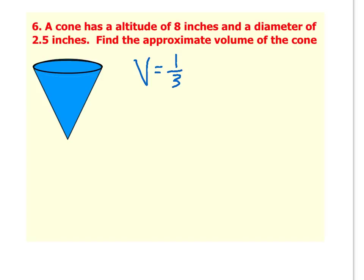The volume of a cone is 1 third times the area of the base times the height. And of course the base of the cone is pi r squared times the height of the cone.